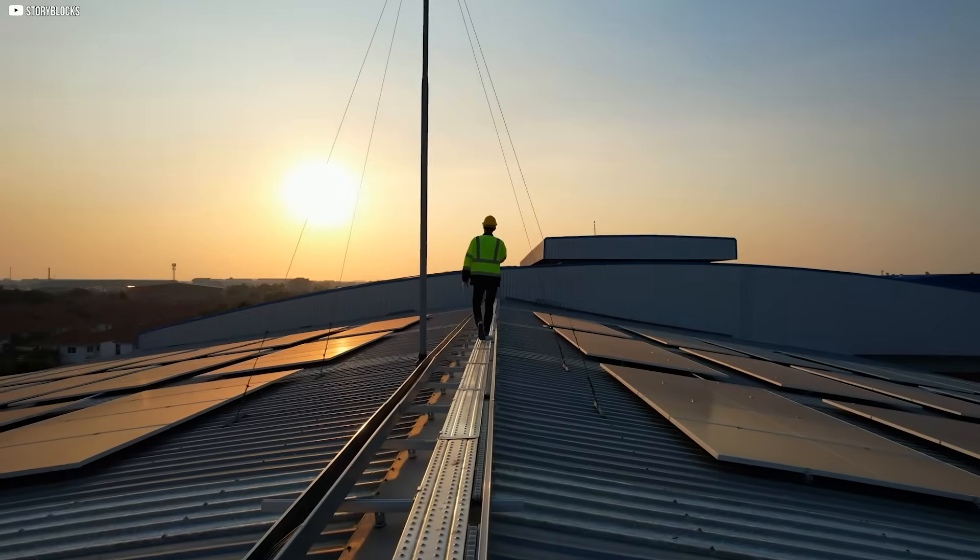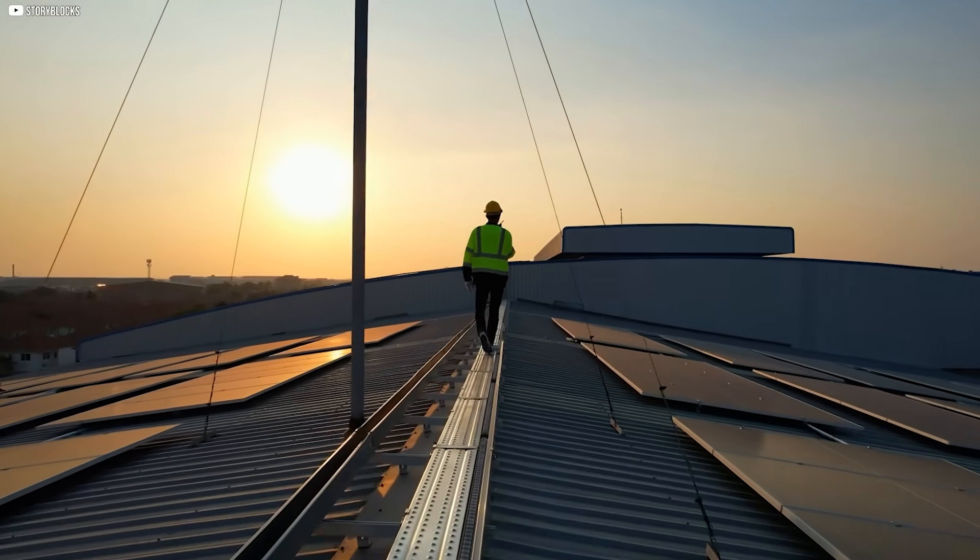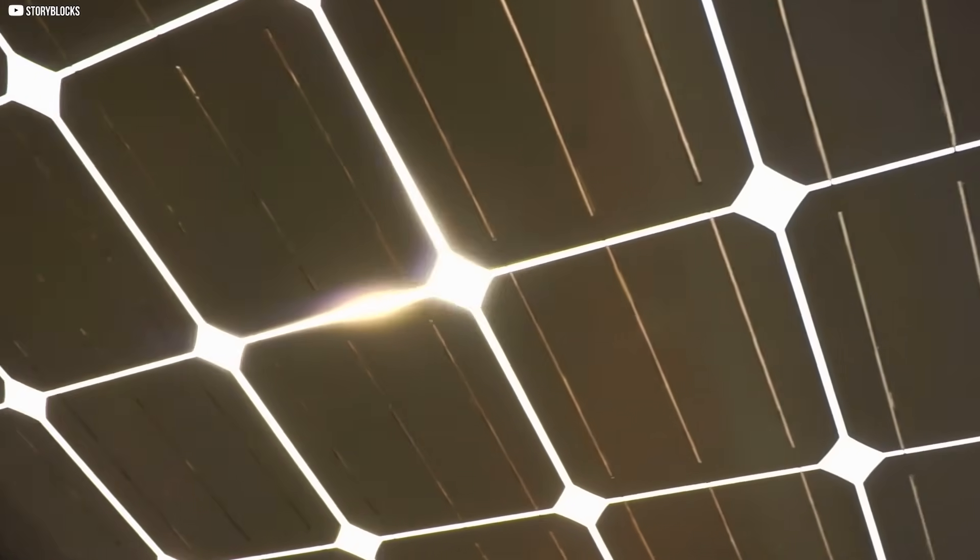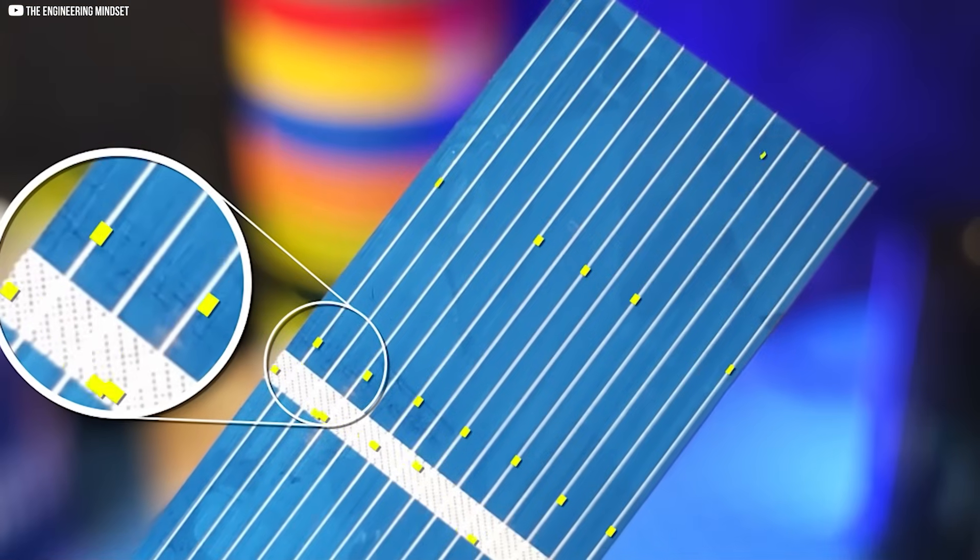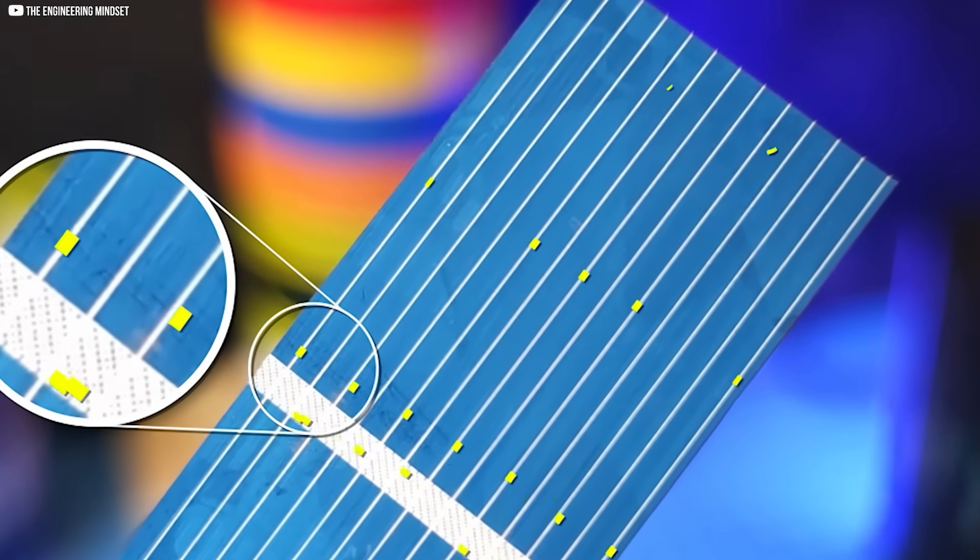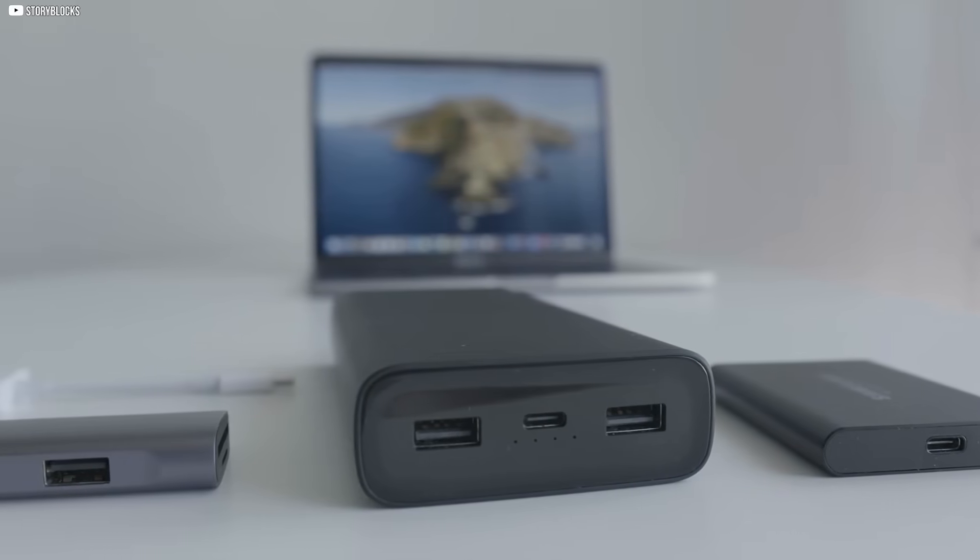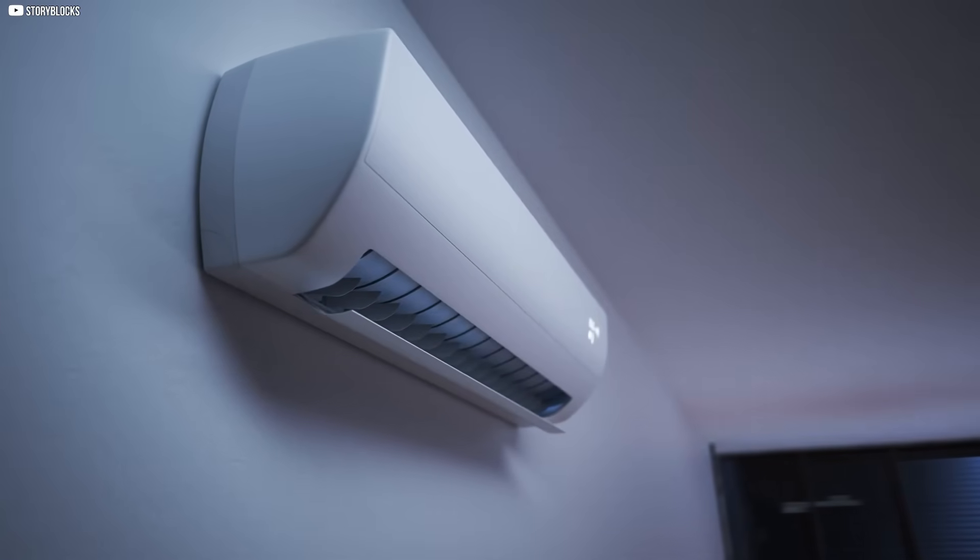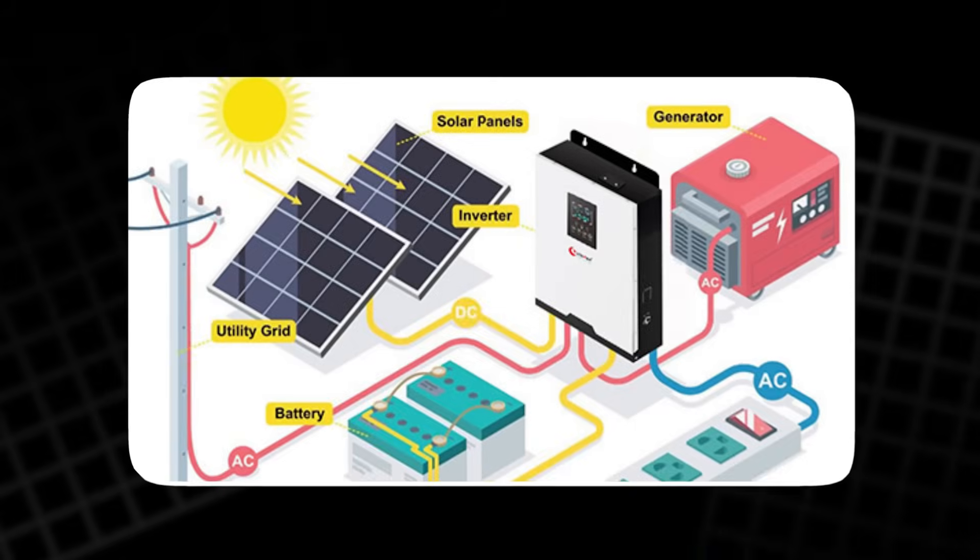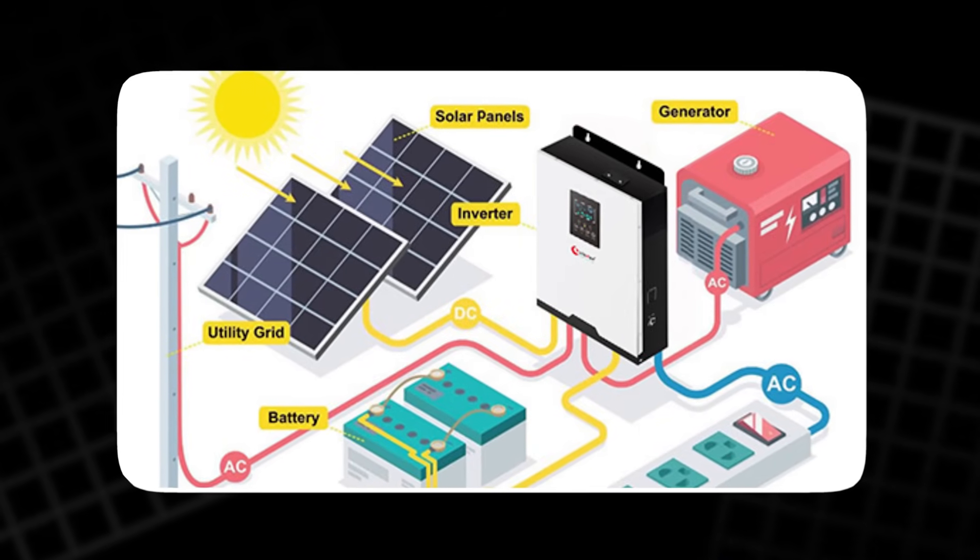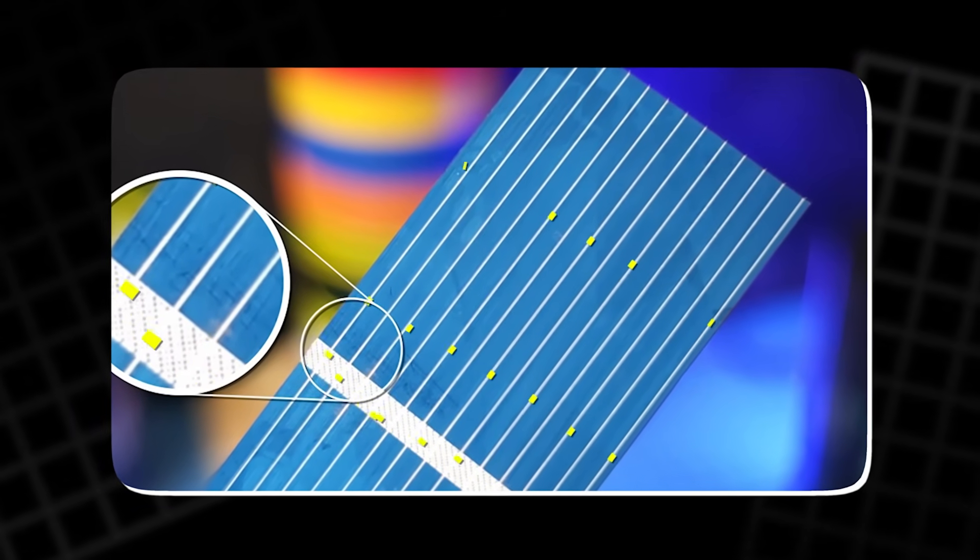Storage and Grid Connection. Generating electricity from sunlight is only half the story. The real challenge is making that energy available when you actually need it. Solar panels produce DC power, which is fine for charging batteries or running certain low-voltage devices. But most homes and businesses use AC power. That's where the inverter comes in. It takes the DC from your panels and flips it into AC, syncing with the voltage and frequency of your local grid.